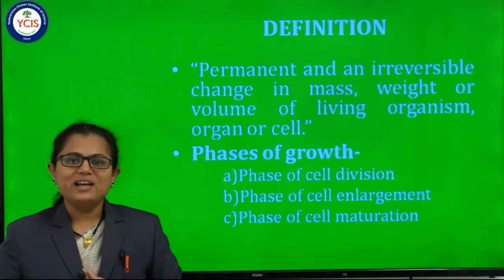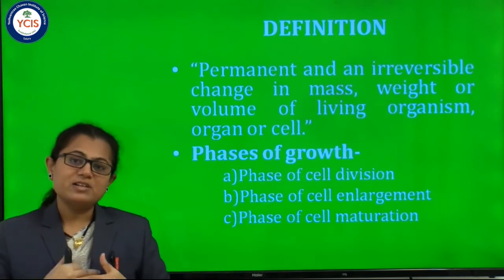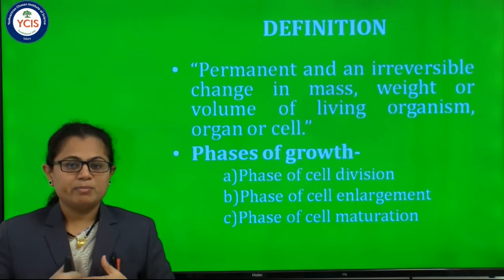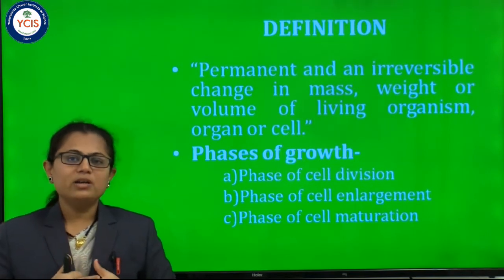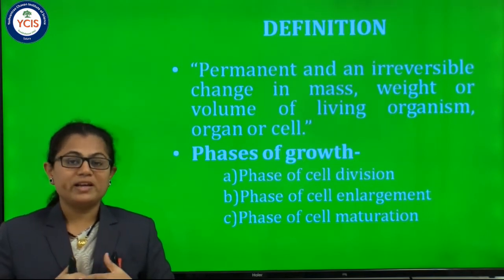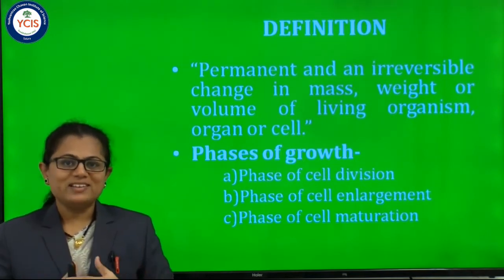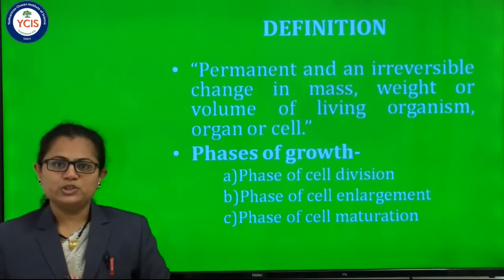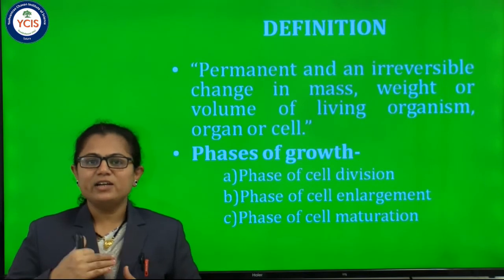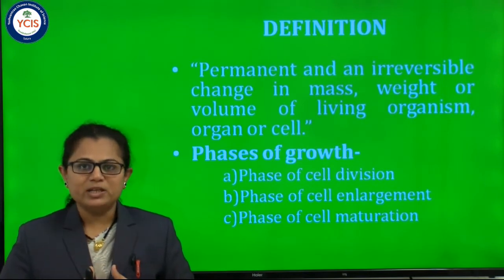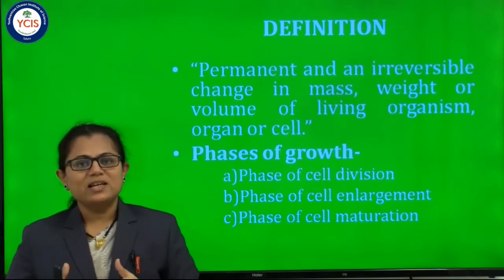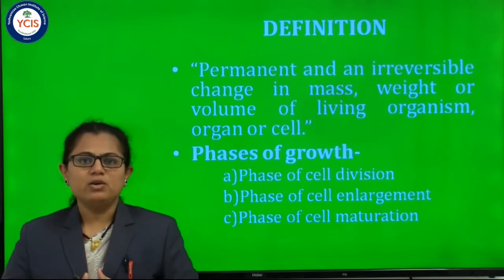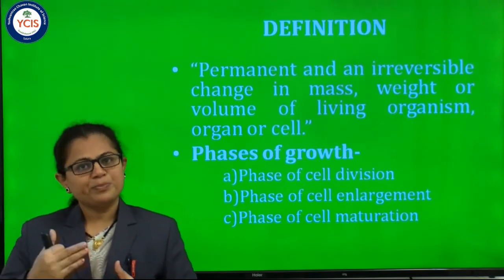The second phase is cell enlargement. After cell division, there is an enlargement of the cell by addition of cellular material, addition of vacuole at the center. The third phase is cell maturation, where the cell gets fully matured. One of the cells goes back to division again, and one goes to the permanent tissue.